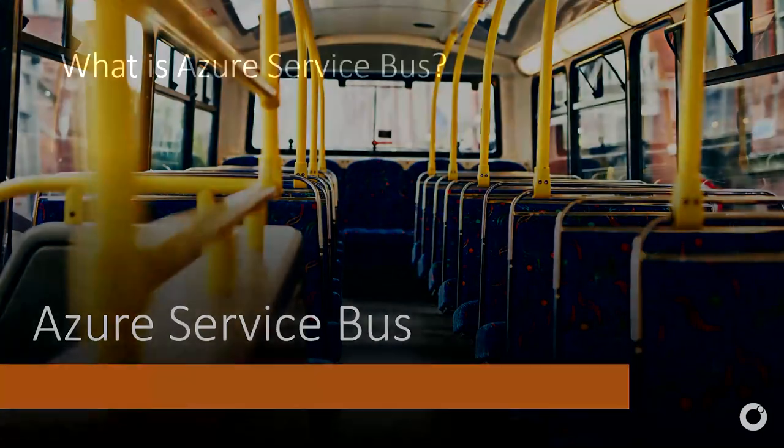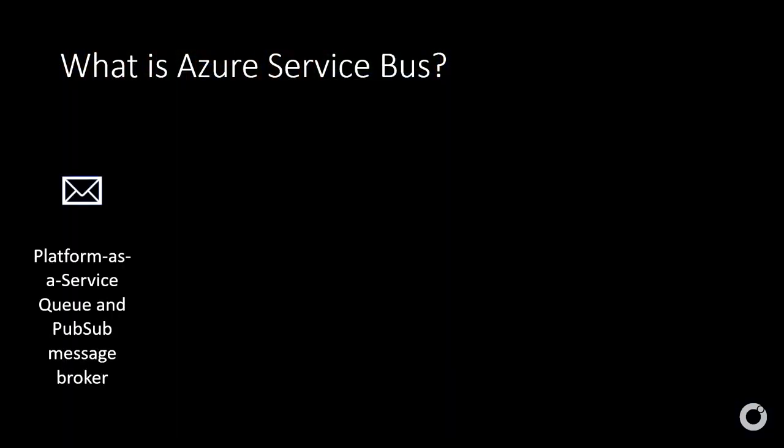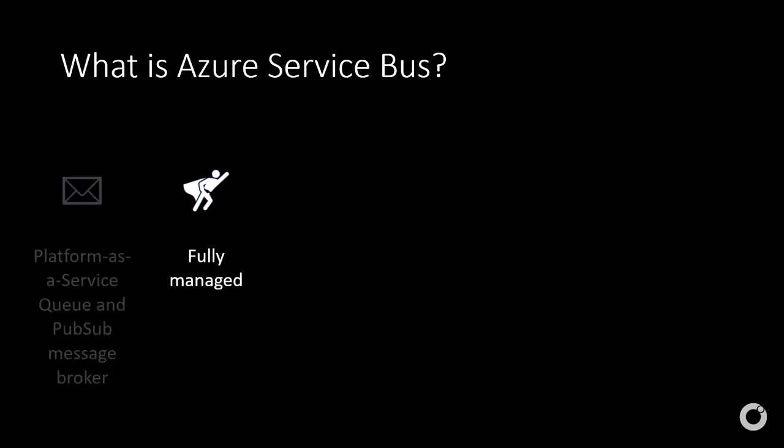Azure Service Bus is a platform-as-a-service queue and pub-sub message broker. Queues work like this: a producer puts a message in, one or multiple consumers retrieve and process it, and the message is gone. Topics allow a producer to publish to a topic with one or multiple subscriptions — messages are routed to all subscriptions or filtered to specific ones — and each subscription acts as a queue where the consumer picks up and processes the message. Service Bus is also fully managed, so you don't think about infrastructure.